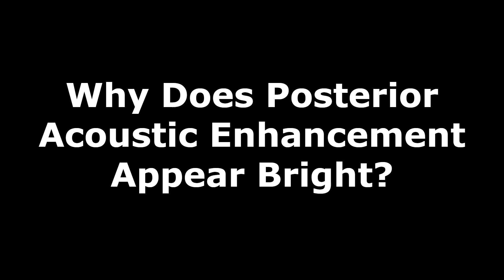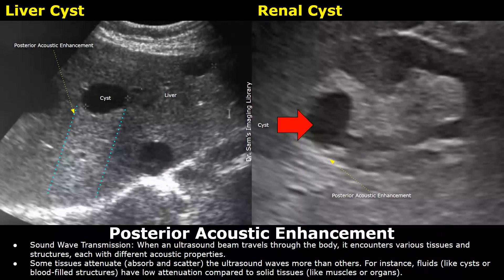Hello everyone, this is Dr. Sam, and today we will look at why posterior acoustic enhancement appears bright on ultrasound. Posterior acoustic enhancement, also called through transmission or simply enhancement, is an ultrasound artifact that occurs when sound waves pass through a structure that has lower attenuation.